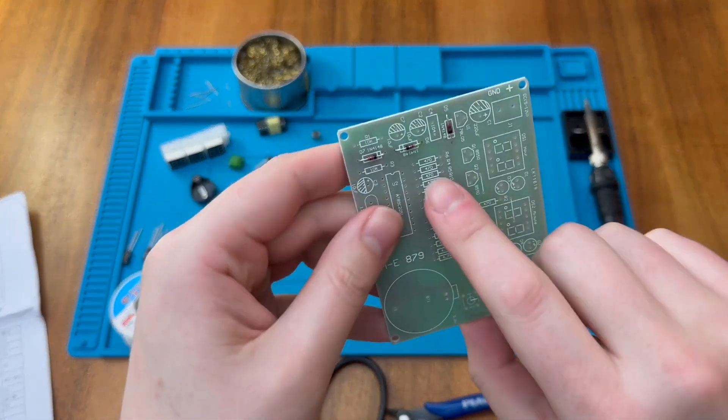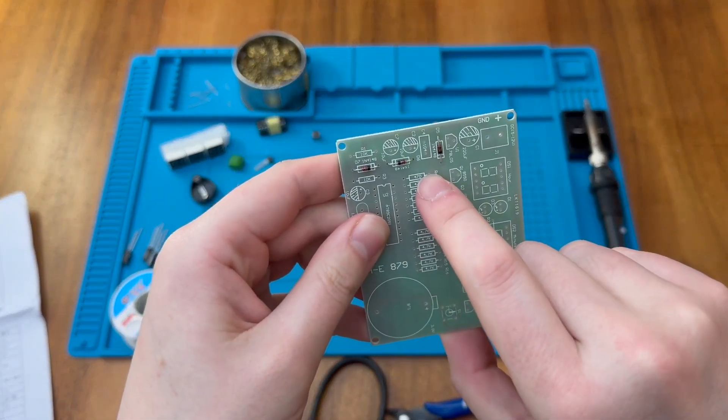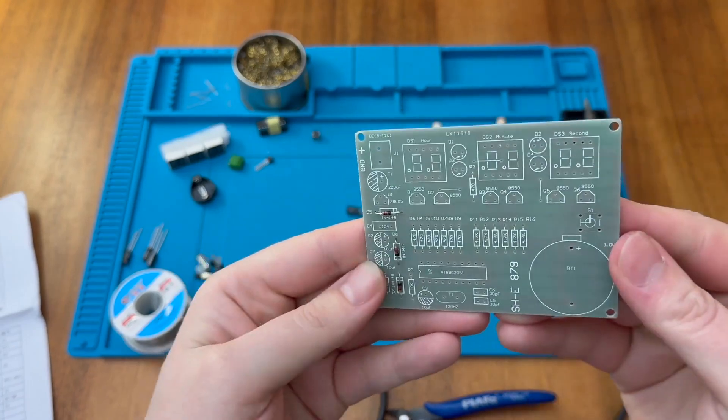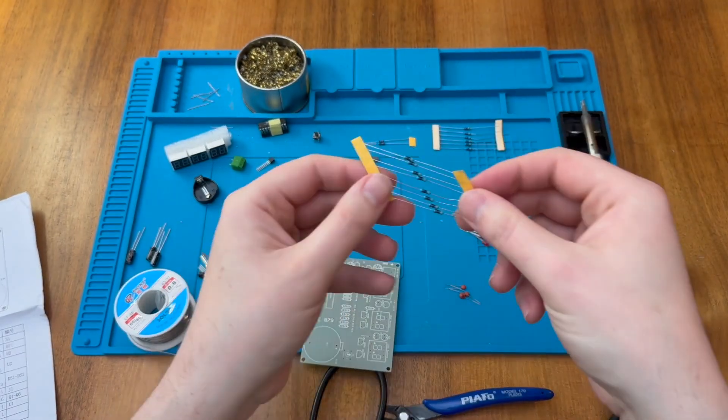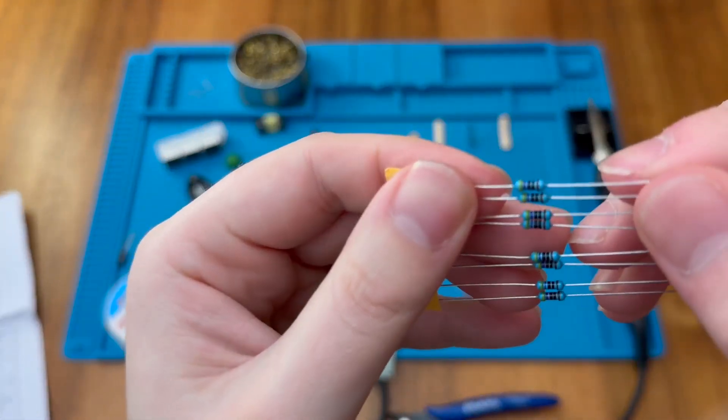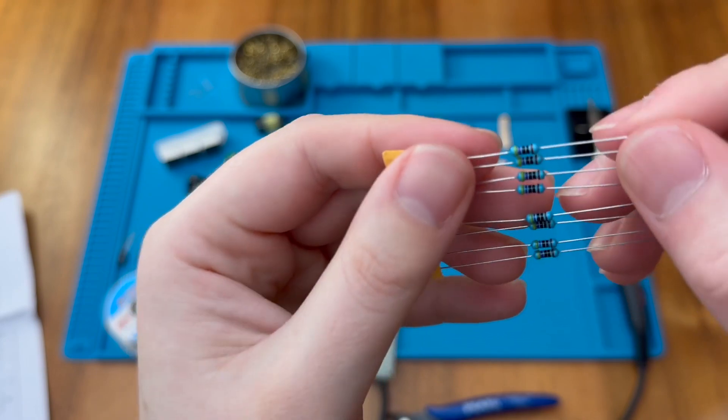Okay, so next there's eight 470 resistors here, and that will be these. That will be yellow, purple, black, black, with a tolerance band of brown.